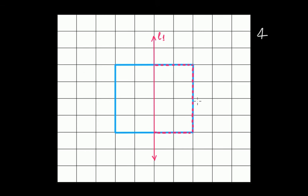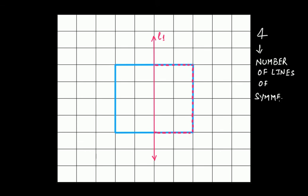Two lines of symmetry pass from the opposite edges, and two pass from the opposite vertices — that is, they pass over the diagonals. So we have a total of 4 lines of symmetry for a square. In the next video we are going to have a similar discussion for a rectangle.